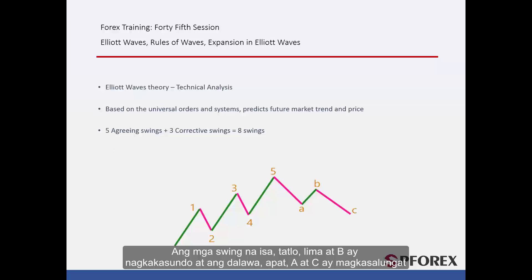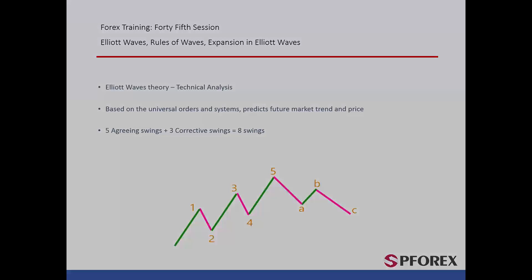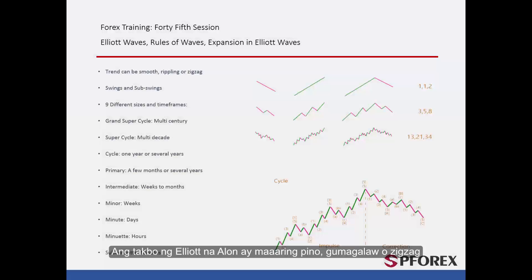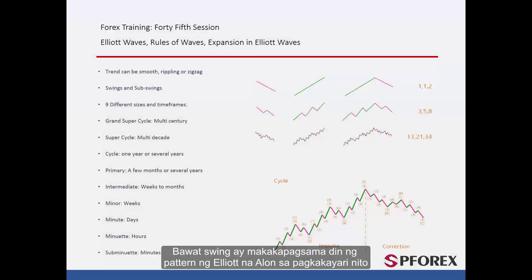Swings 1, 3, 5 and B are agreeing, and swings 2, 4, A and C are reversal. Elliott Wave trend can be smooth, rippling or a zigzag. Each swing can include an Elliott Wave pattern in its structure.